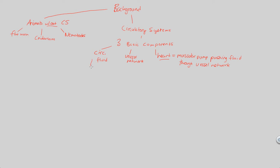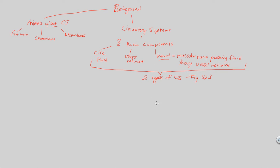Now that we understand what a circulatory system must have, let's look at the two different types. Generally speaking, there are two types of circulatory systems summarized in figure 42.3. Both contain a circulatory fluid, a vessel network, and a central heart. These two types are the open circulatory system and the closed circulatory system.